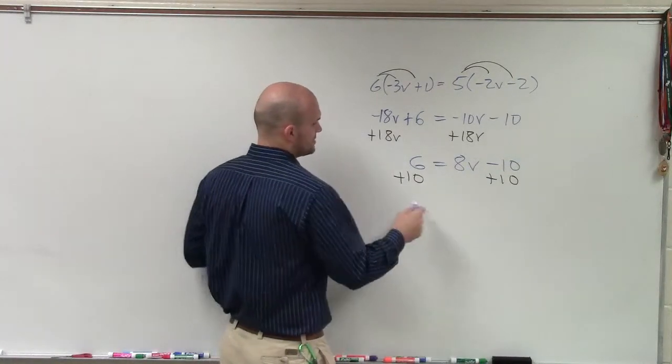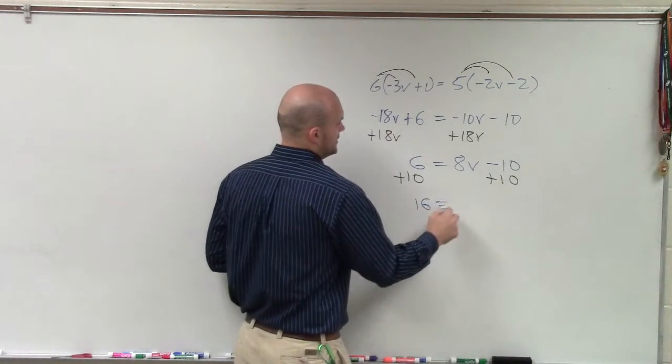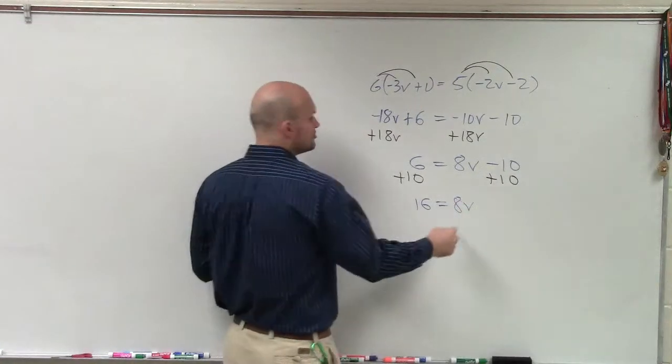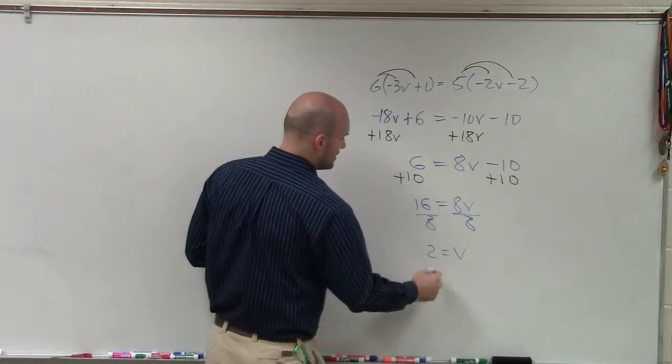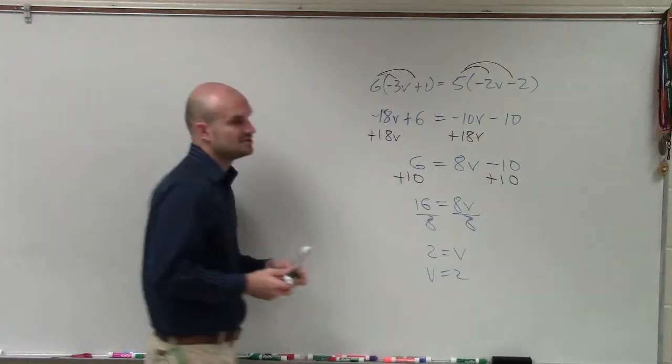So therefore, I have 16 equals 8B. Now I undo multiplication by dividing. And therefore, I have 2 equals V, and then I just rewrite it as V equals 2.